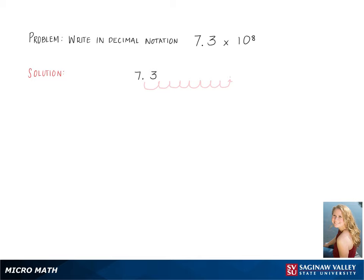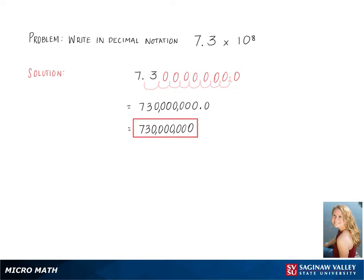This gives us a new decimal point. Now, with all the open spaces, we must fill with zeros. So this gives us 7,300,000,000 — and this is 730 million. This will be our final answer.